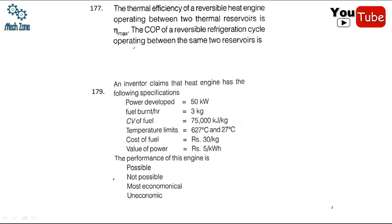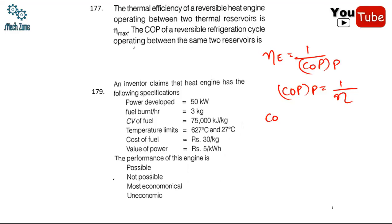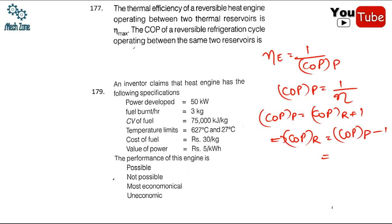Question 177: the thermal efficiency of a reversible heat engine is η_max. The relation between efficiency and COP is: efficiency = 1 / COP_pump. So COP_pump = 1/η. Also, COP_pump = COP_refrigerator + 1. Therefore COP_refrigerator = COP_pump - 1 = 1/η - 1. The correct answer is 1/η - 1.